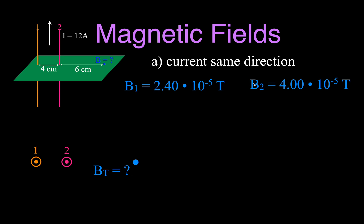Now we've got to figure out the direction and add them up — but maybe one is negative and one is positive, so we need to know the direction since magnetic field strength is a vector quantity. This is a top view. We have wire number one, wire number two, and this point. The dot means that the current from those two wires is flowing out of the page — the current is flowing up, which in top view is out of the page. That dot is the vector representation for a vector flowing out of the page.